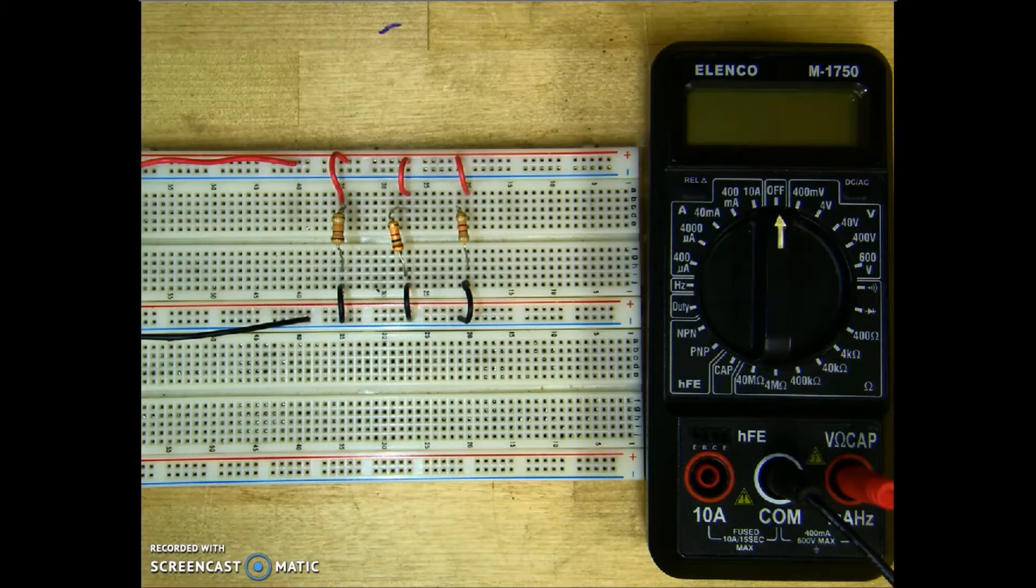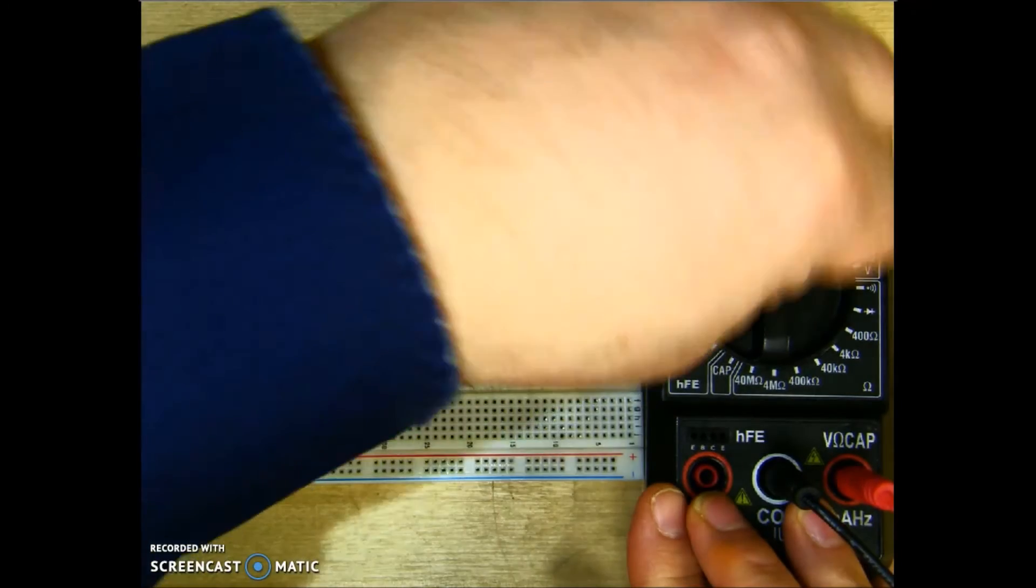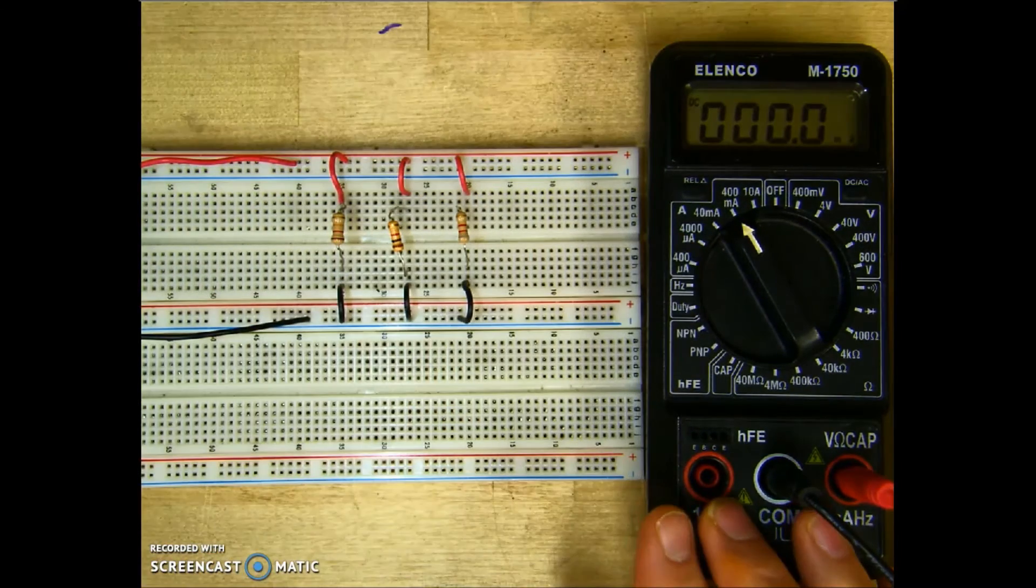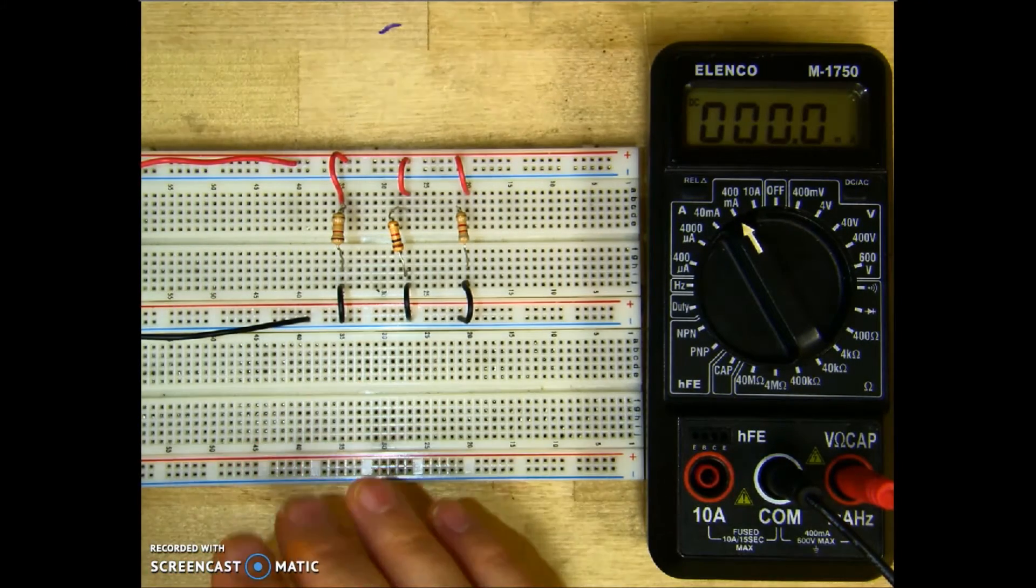It's time now to go ahead and take my current readings for the circuit. Since I don't know what the actual current is going to be, I'm going to go ahead and turn my meter down to 400 milliamps.